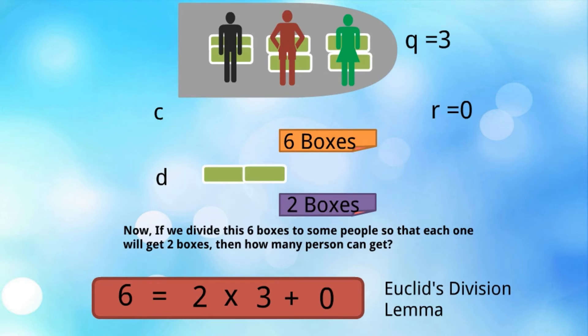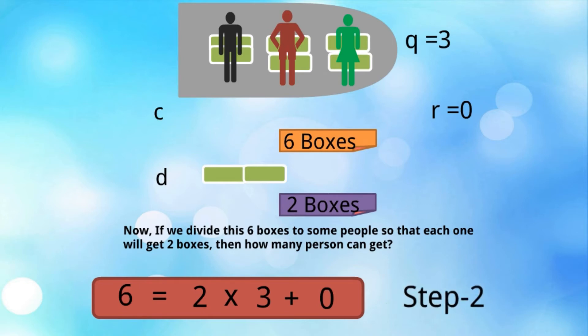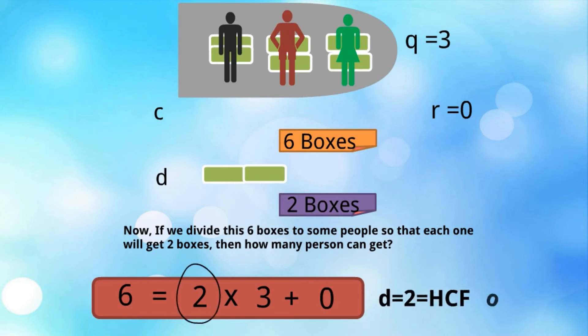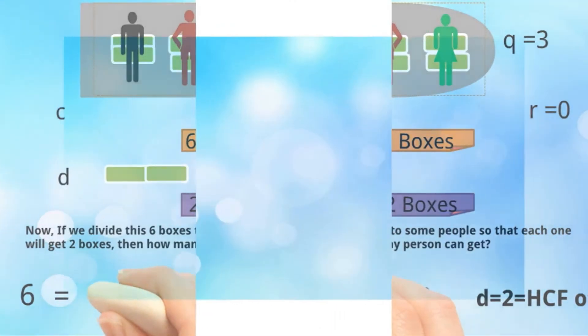Since r = 0 in step 1, by Euclid's Division Algorithm the divisor — which is 2 — is the HCF of 6 and 2.